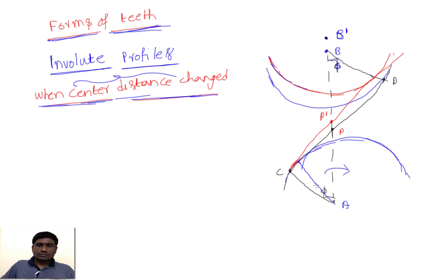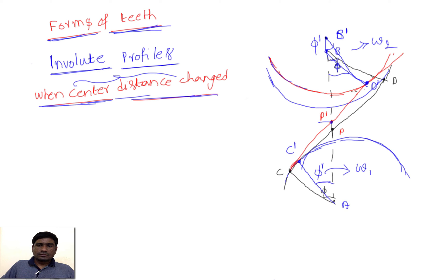If I draw and join these lines, the new pressure angle becomes phi-dash. So P-dash changes and phi-dash changes. The center distance also changes from BP to B-dash P-dash, and from AP to A-dash P-dash. Now we want to see whether this still produces constant angular velocity or not. This point becomes C-dash and this point becomes D-dash.